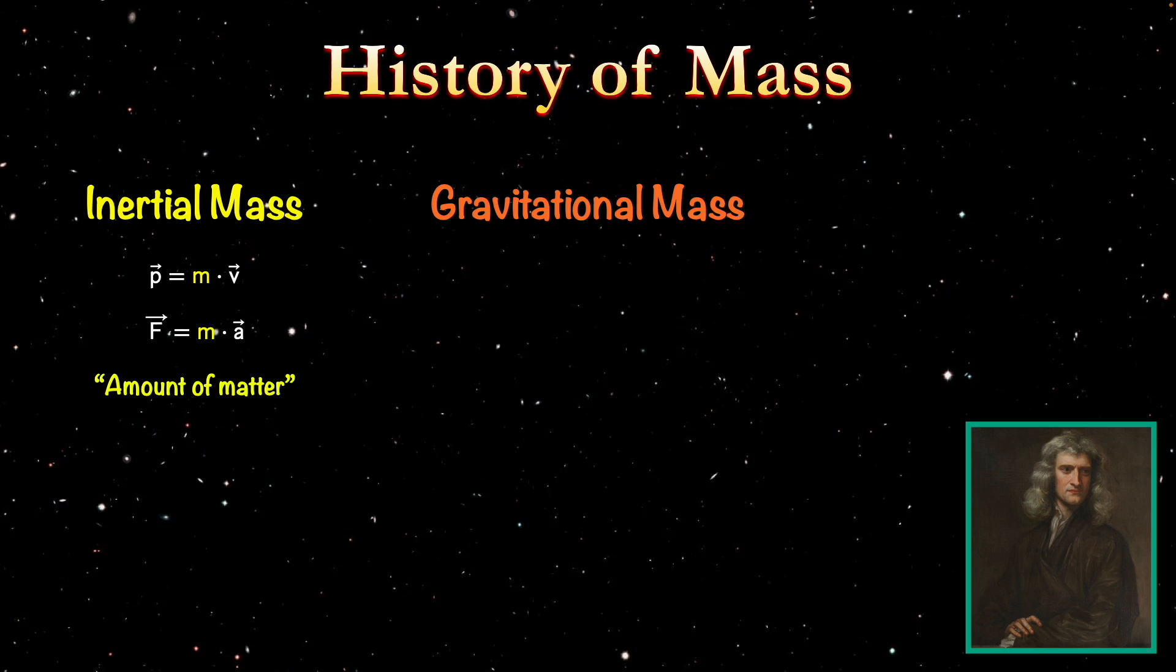The gravitational mass is the mass that shows up in Newton's Universal Law of Gravitation. This is the mass that is responsible for objects attracting one another via gravity. In principle, these two masses are not the same. But experimentally, they turn out to be the same.